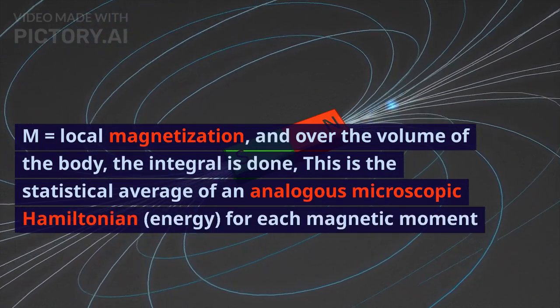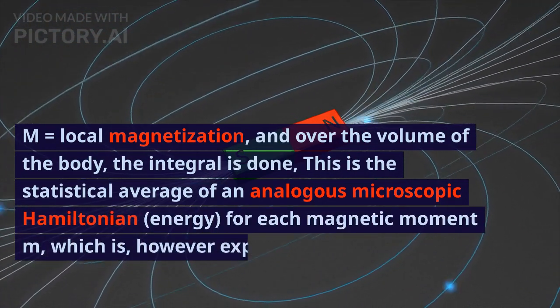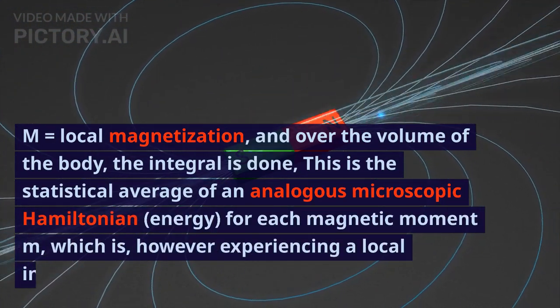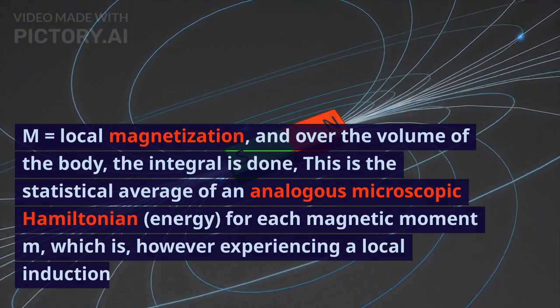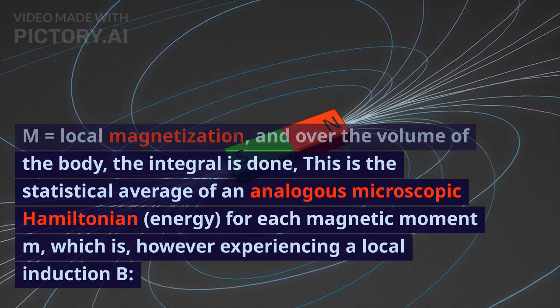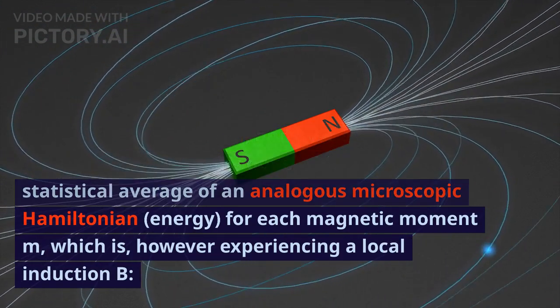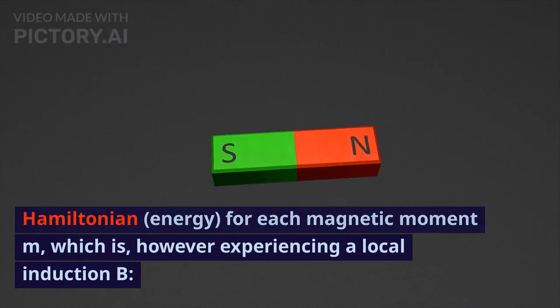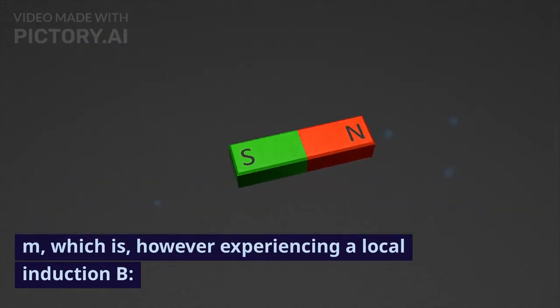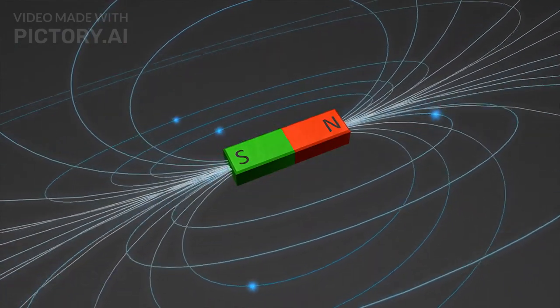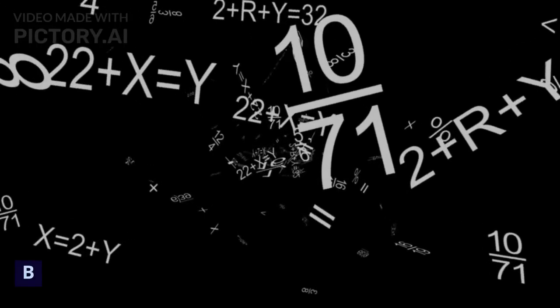This is the statistical average of an analogous microscopic Hamiltonian energy for each magnetic moment m, which is experiencing a local induction b, where H equals m times b.